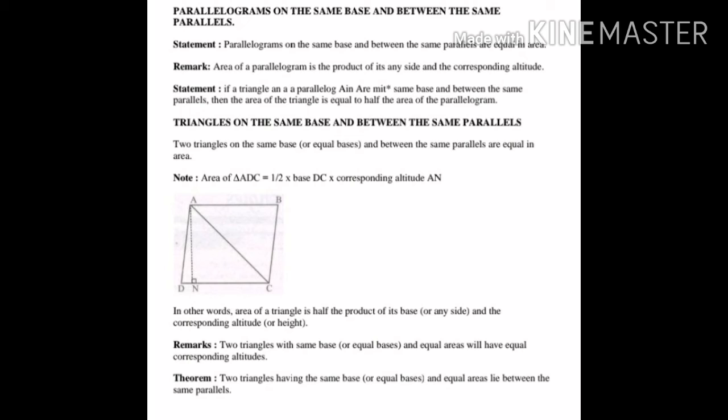Statement: If a triangle and a parallelogram lie on the same base and between the same parallels, then the area of the triangle is equal to half the area of the parallelogram. اس کا مطلب ہے کہ اگر ایک triangle اور ایک parallelogram دونوں same base میں ہوں اور same parallels کے بیچ میں ہوں تو triangle کا area، parallelogram کے area کا آدھا ہوگا۔